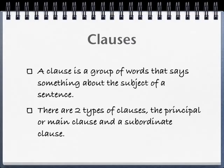Clauses. A clause is a group of words that says something about the subject of the sentence. There are two types of clauses: the principal clause, or the main clause, and a subordinate clause.